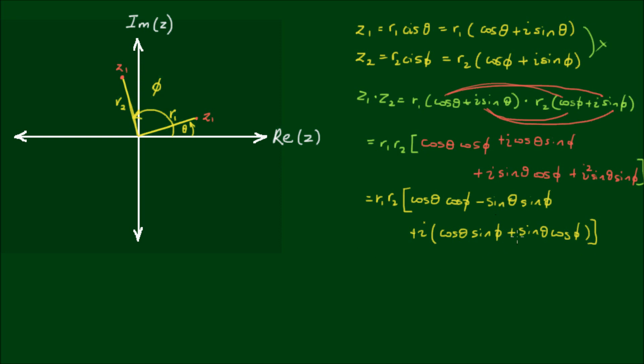And now this looks quite messy still, but here's where the power of trig identities comes to the rescue again. Because this expression here can be abbreviated to cos of θ plus φ.